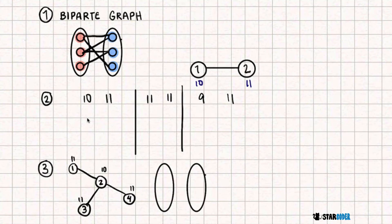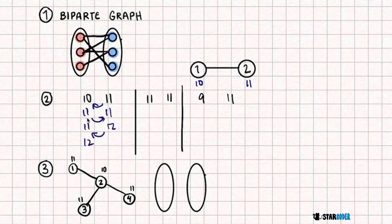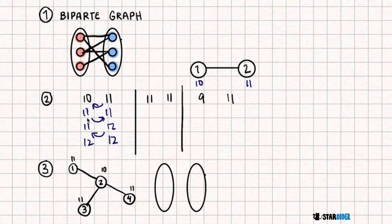Room two moves to room one: that gives us 11, 11. Back, then 11, 12. Back again, 12, 12. In this scenario, if the two differ by one, we know they can both reach 12. Even if we have something like 9 and 10, if we keep adding on, we know that eventually they will both reach 12.